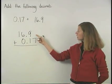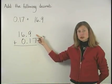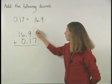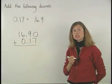Notice that 16.9 has nothing in the hundredths position, so we can use a zero to fill this position.